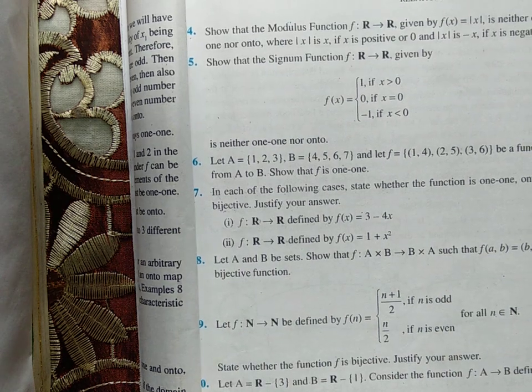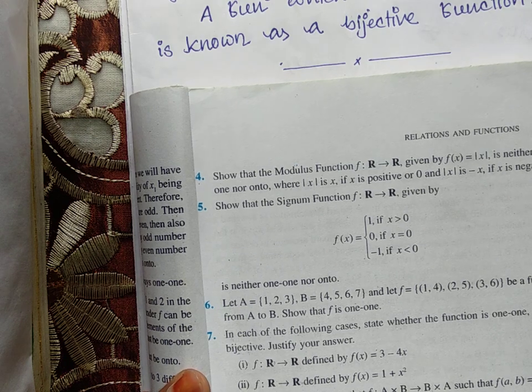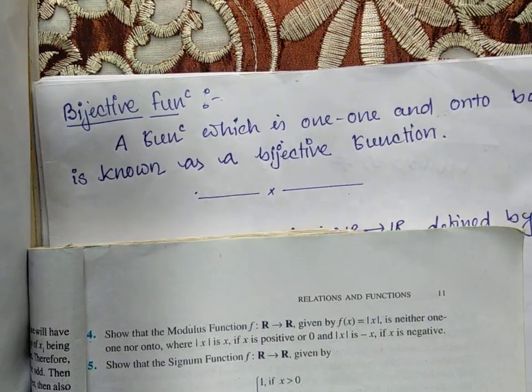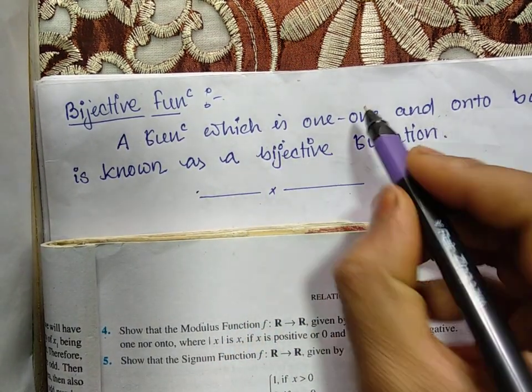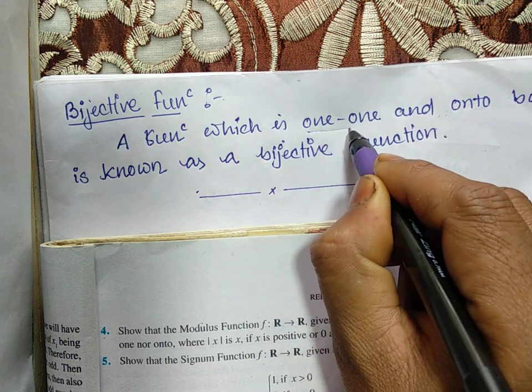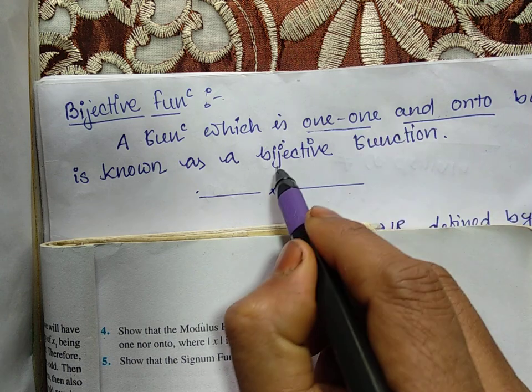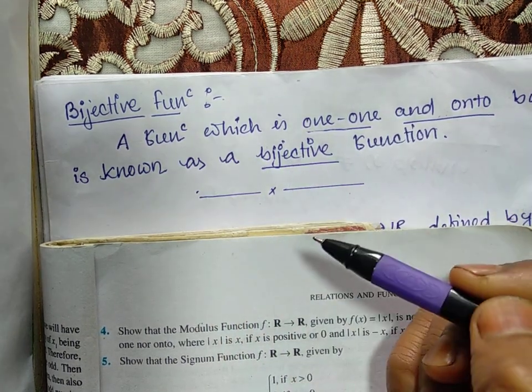In each of the following cases, state whether the function is one-one and onto or bijective. Bijective means what? A function which is one-on and onto both is known as a bijective function. So one specific definition is there for bijective function.